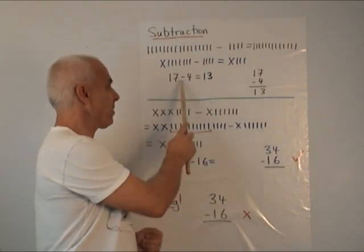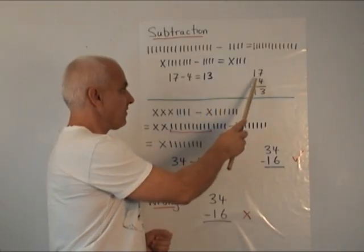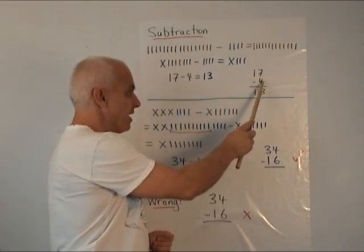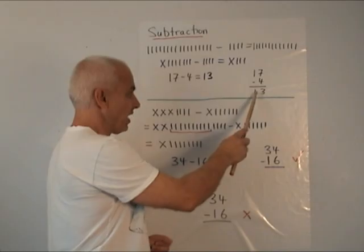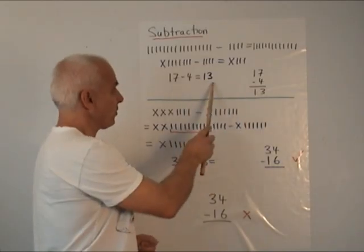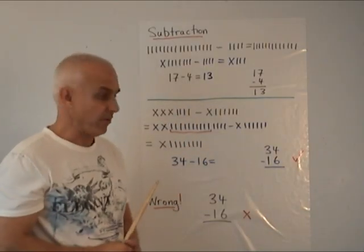In terms of Hindu-Arabic notation, 17 minus 4, we write 17 minus 4. 7 ones minus 4 ones is 3 ones. And 1 ten minus 0 tens is 1 ten. So we get 13. And that mimics what we're doing with the Roman numerals.